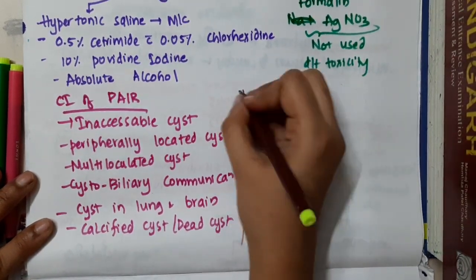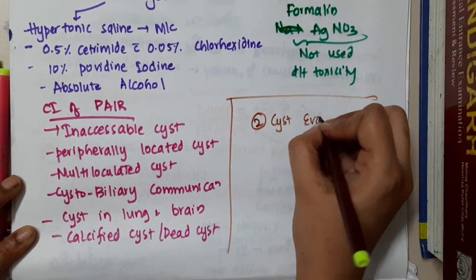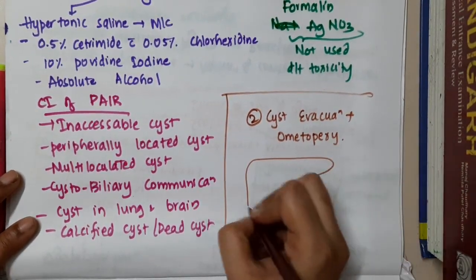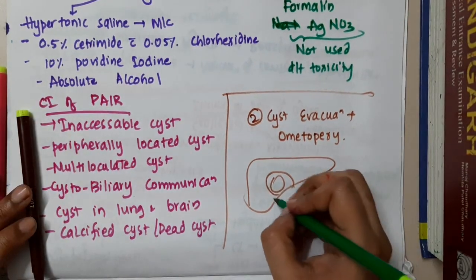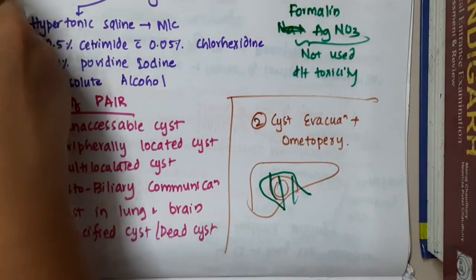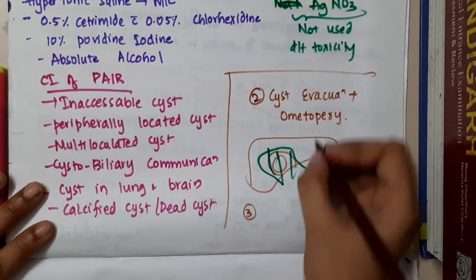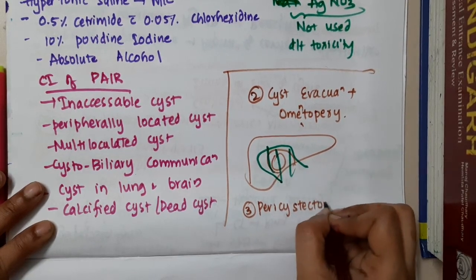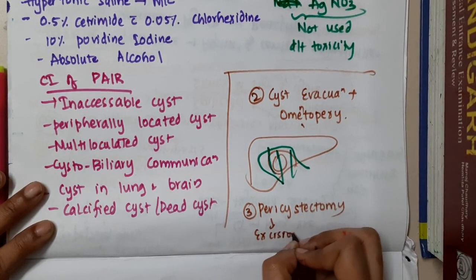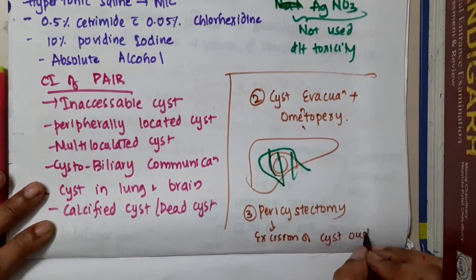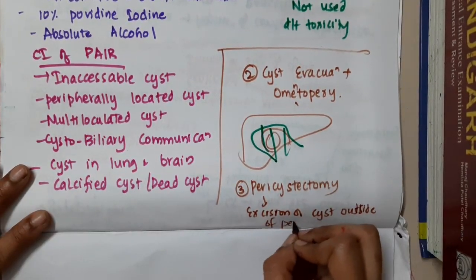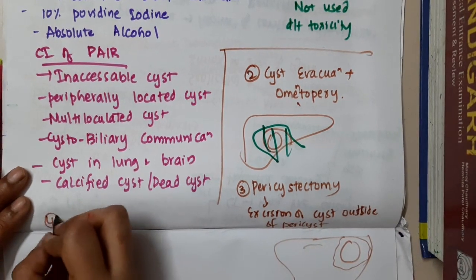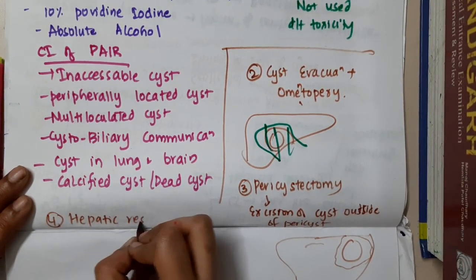Other surgical techniques include cyst evacuation with omentopexy, where the cyst is removed and covered with omentum; pericystectomy, which is excision of the cyst outside the pericyst; and hepatic resection.